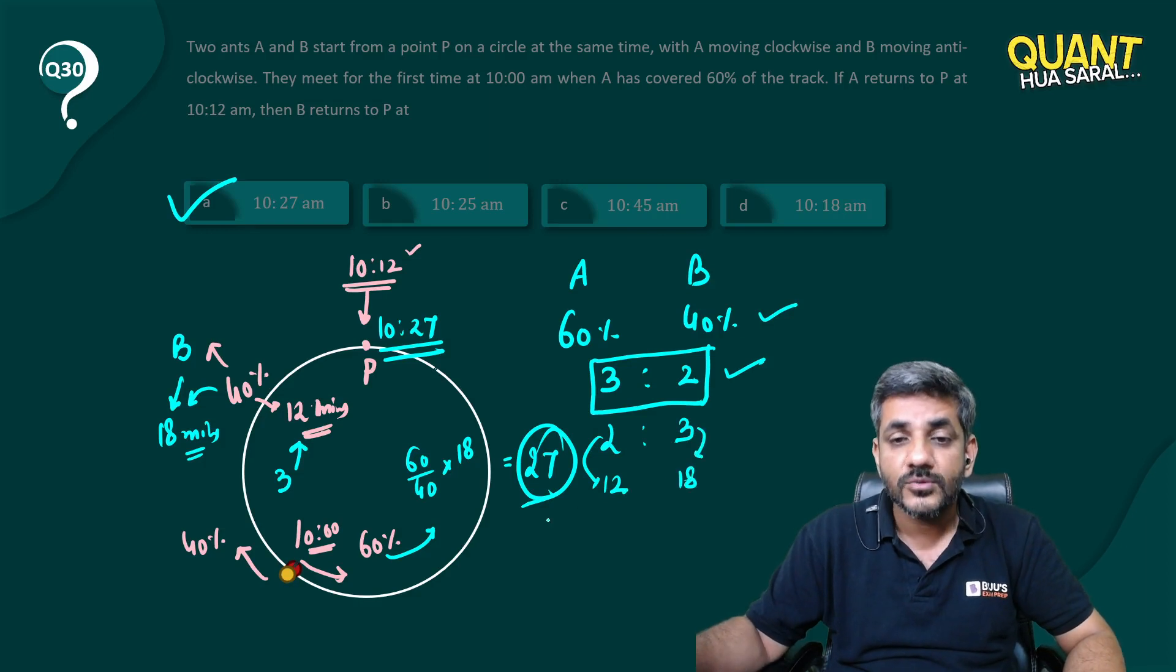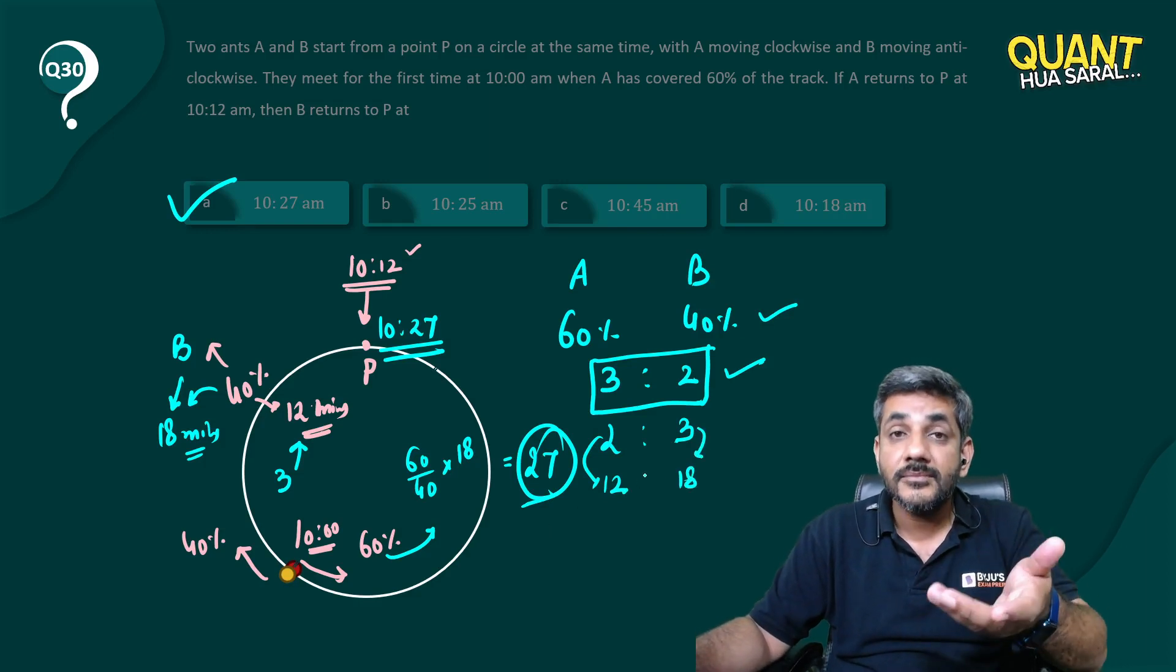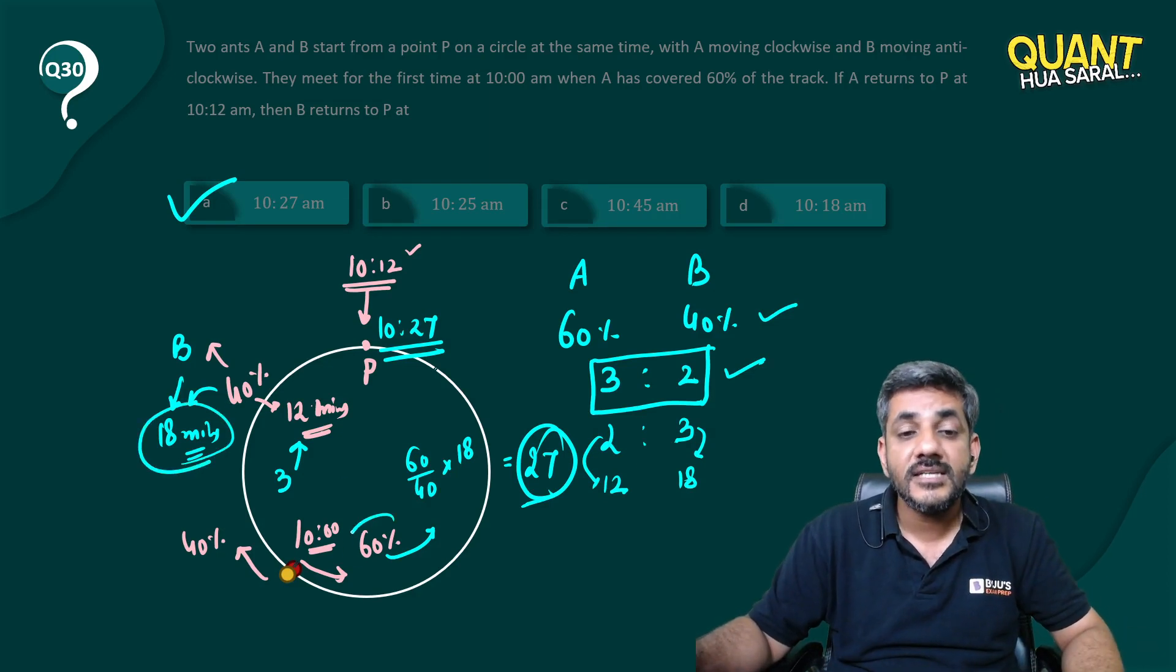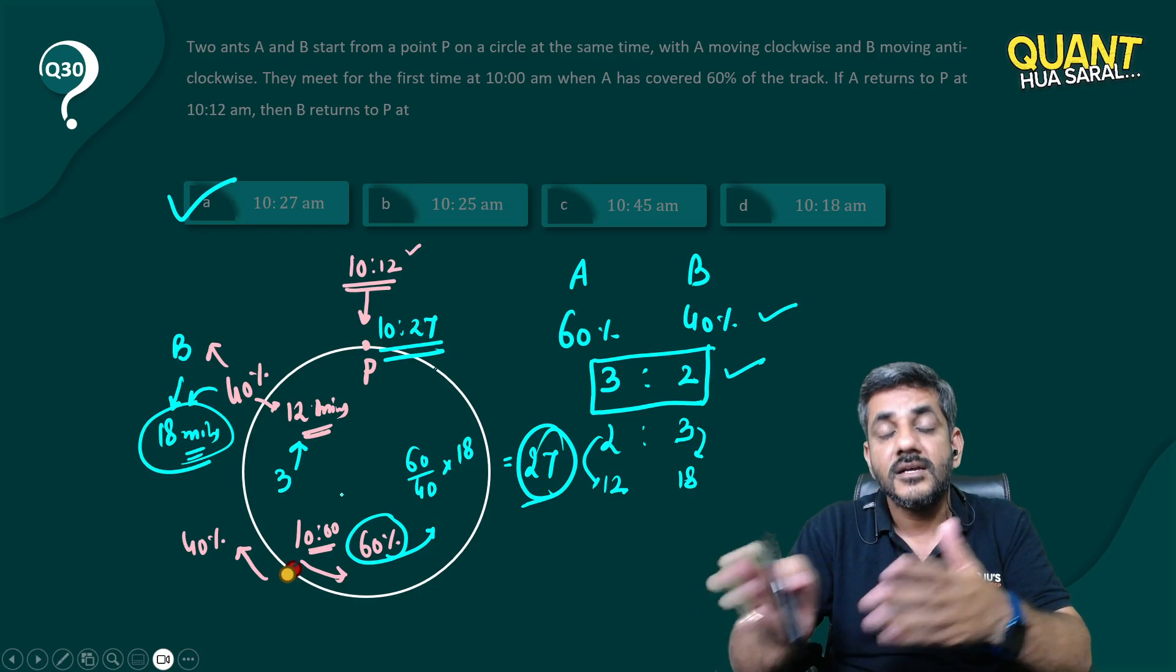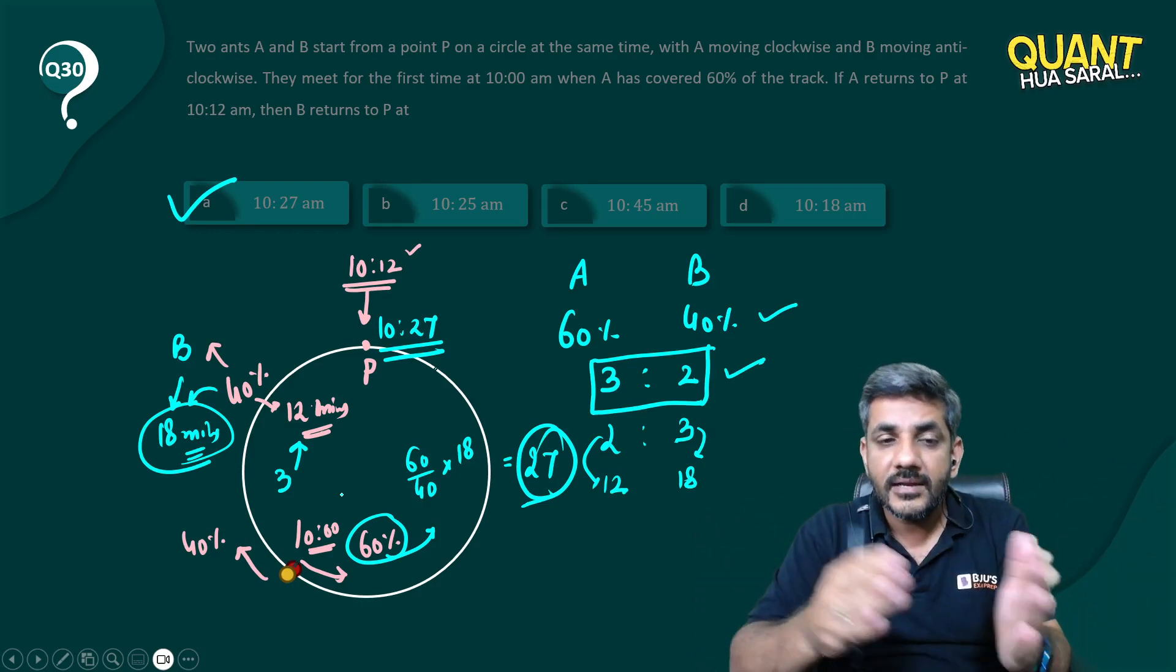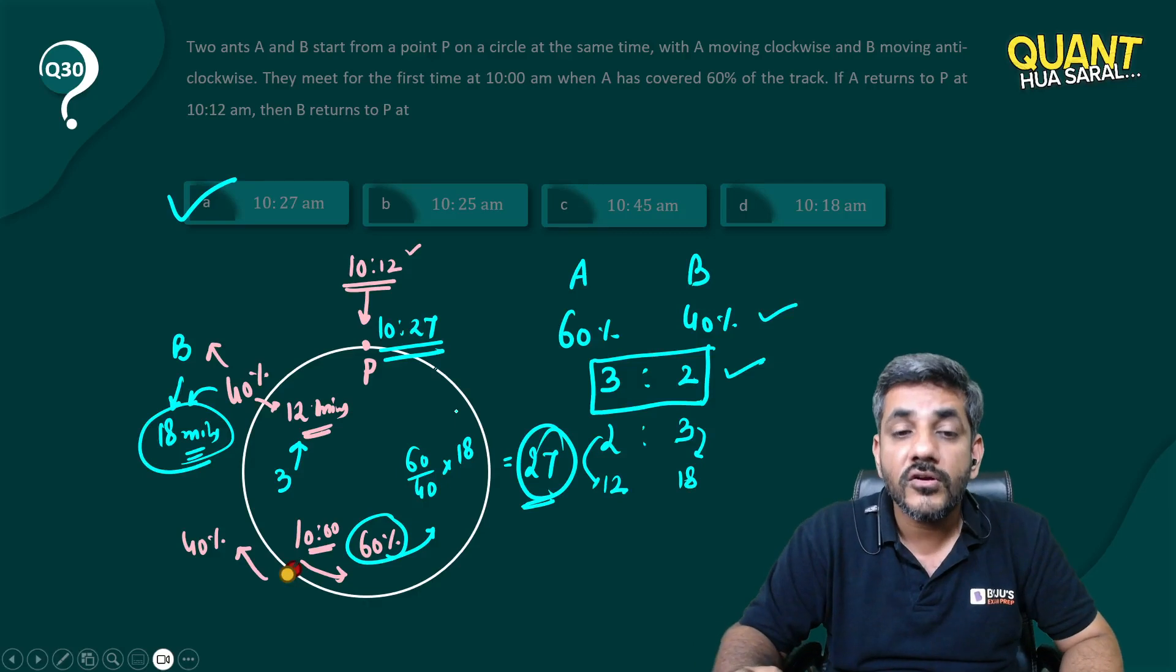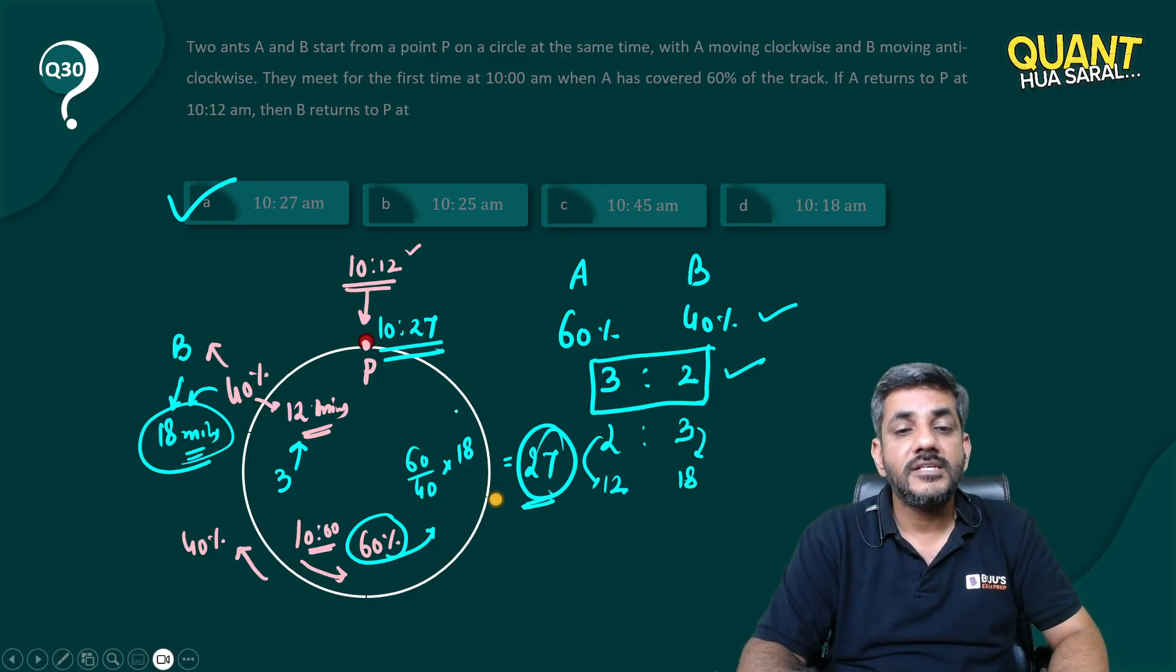When ant A has taken 12 minutes to cover a distance, ant B is going to take 18 minutes to cover the same distance. And if 40% is covered in 18 minutes, then 60% is covered in how many minutes? So once again I'm using proportionality - more distance, more time taken. So it becomes 27.